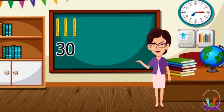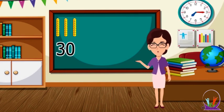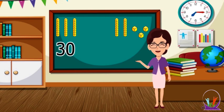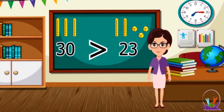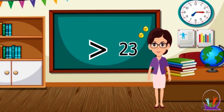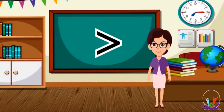Then here, how many tens? There are three tens. And here, there are two tens and three ones, which means 32. So 32 is greater than 30. The greater sign always eats the greater amount.